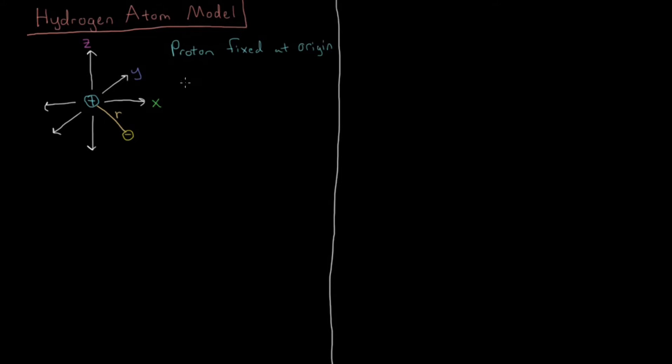And we know that the proton has a charge of, let's say Q of P, equals plus the magnitude of the electron charge, which is plus 1.60 times 10 to the minus 19th coulombs. And the mass of a proton is going to be the atomic mass unit, 1.661 times 10 to the minus 27th kilograms, or thereabouts.